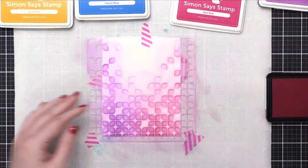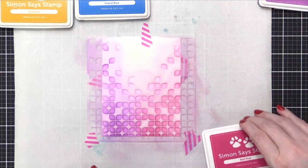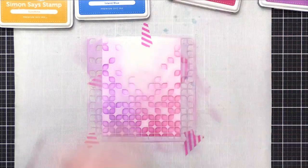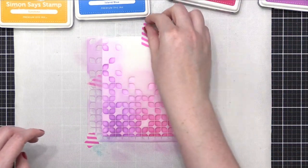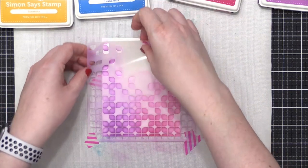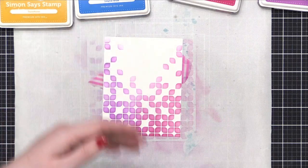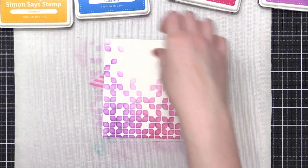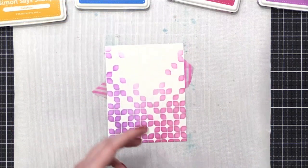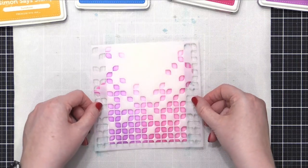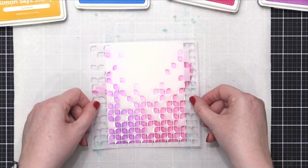So now I'm going to pick up that stencil, and you'll be able to see the design, and it's really beautiful just as is with just the two colors. But I'm going to do a technique with stenciling that's called offset stencil. And what that means is I'm going to take the same stencil, and I'm just going to place it right over the top, and just move it a little bit away from that original blending.